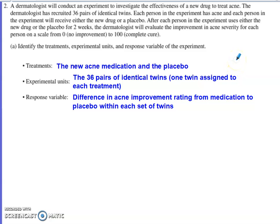In Part A, we're asked to identify the treatments, the experimental units, and the response variable of the experiment. The treatments should be pretty obvious — there are two different groups. People in the first group receive the new medication, and people in the other group receive the placebo.